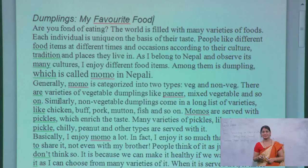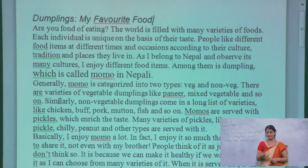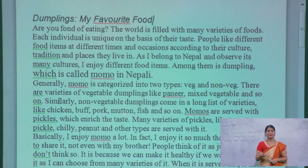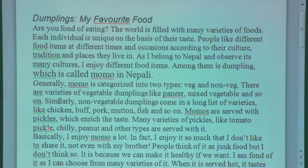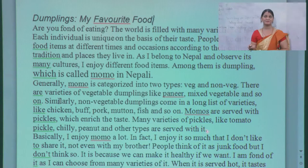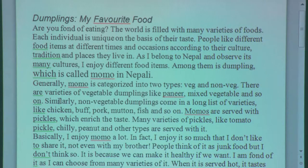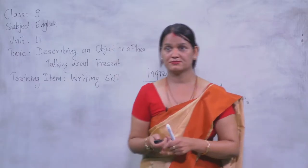In the second paragraph you can see that generally momo is categorized into two types — vege momo and non-vege. There are varieties of vegetable dumplings like paneer, mixed vegetable and so on. Similarly, non-vegetable dumplings come in a long list of varieties like chicken, pork, mutton, fish and so on. Momo are served with pickles which enrich — enhance — the taste. Many varieties of pickles like tomato pickle, chili, peanut and other types are served with it. The writer is explaining about what kind of momo we can find in the restaurant.